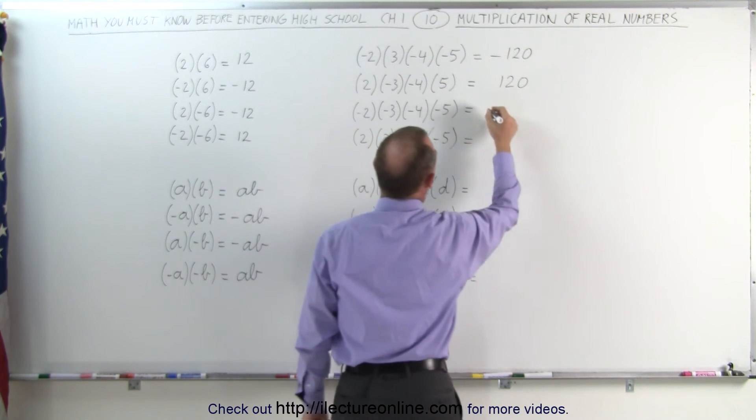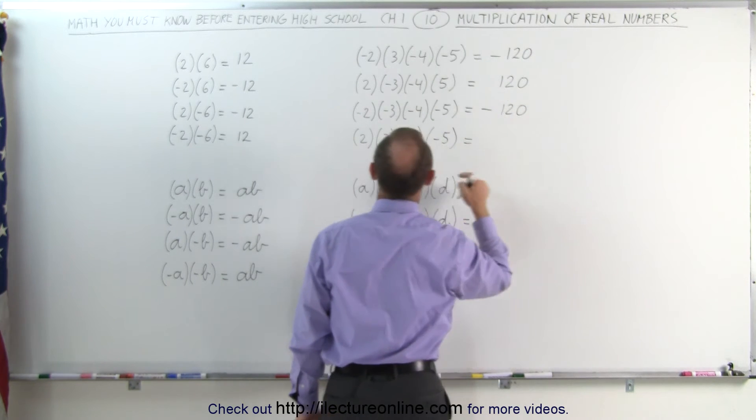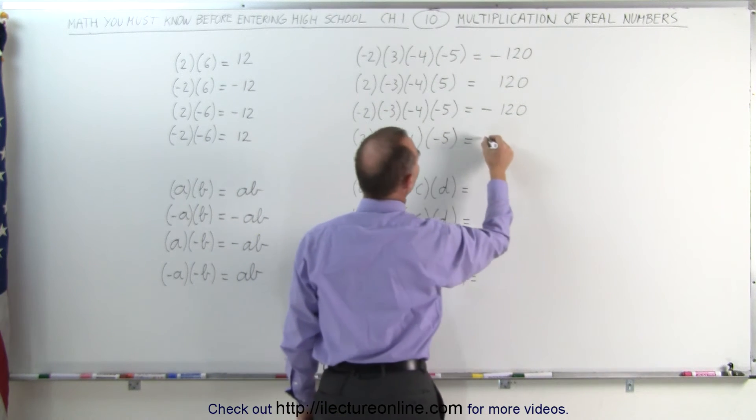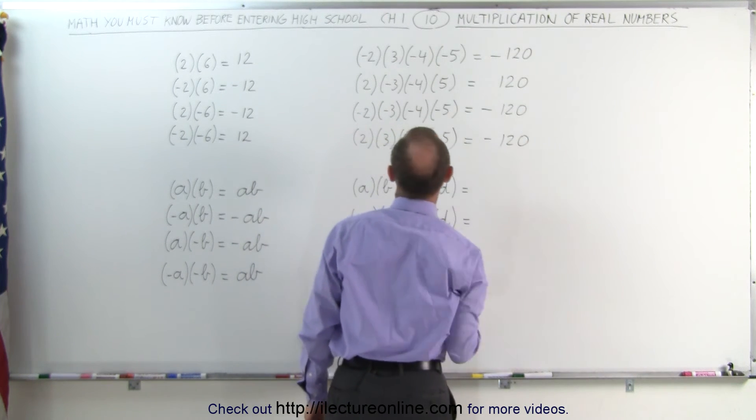If three of them are negative, a negative 120. And if one is negative, again, a negative 120.